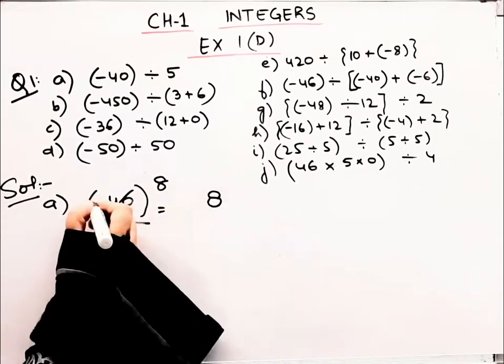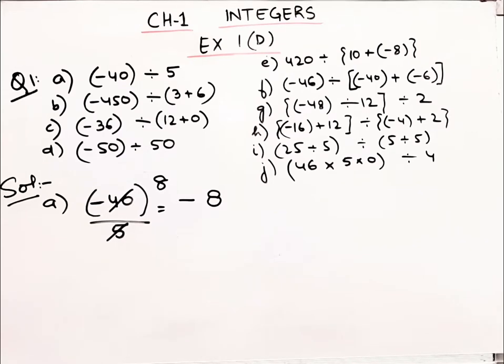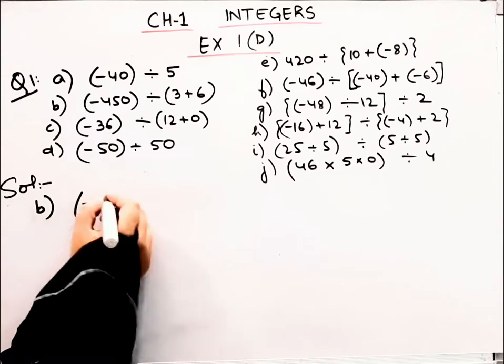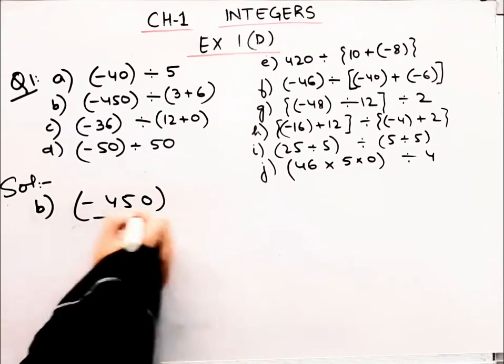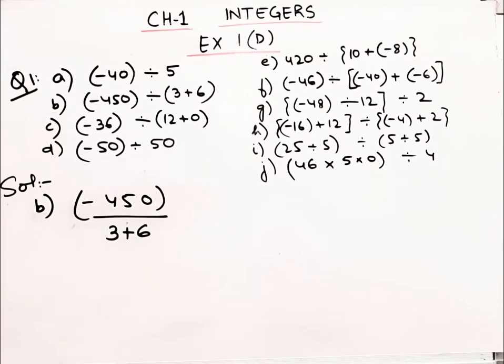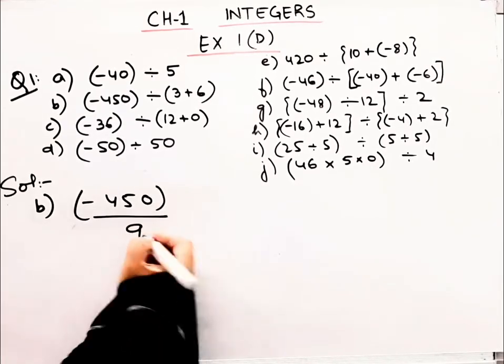Let me tell you when is 40 in the table. It comes in 5 times 8, so this is 5 times 8 is 40. Minus here, it becomes minus sign. The answer is minus 8. Now let's do part (b). Here we have minus 350 divided by 3 plus 6.